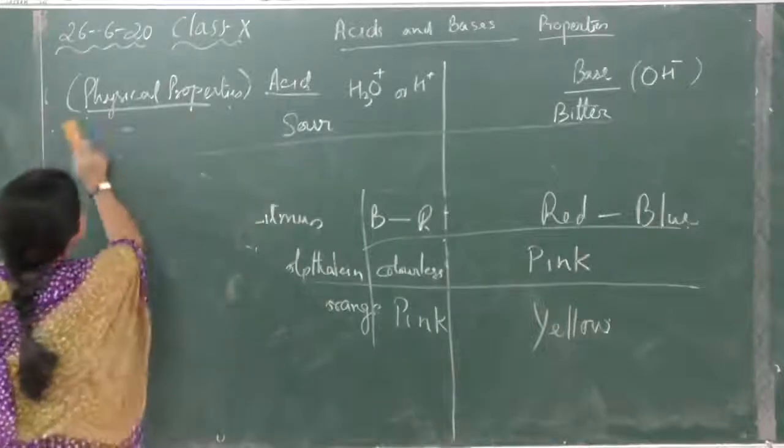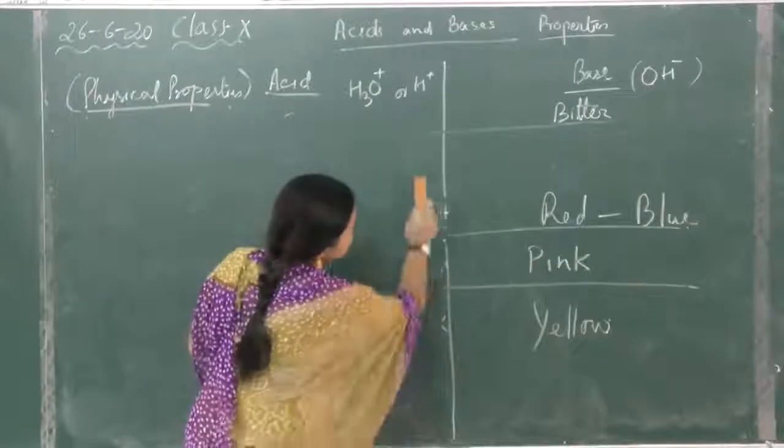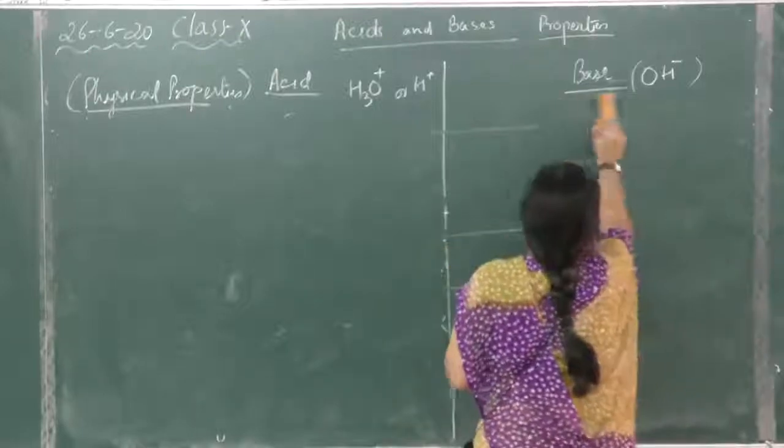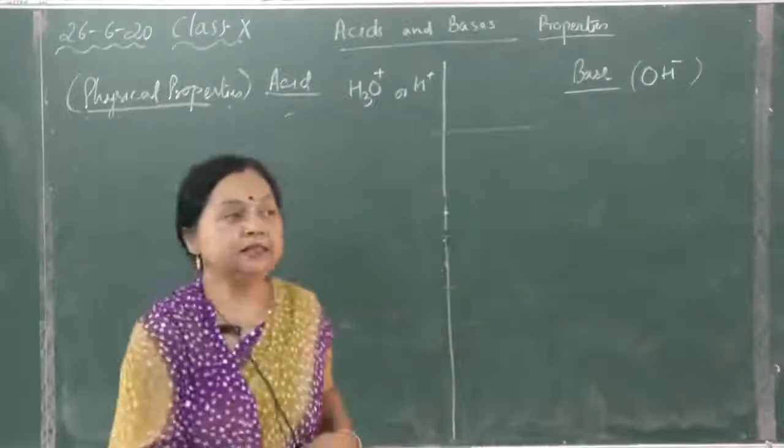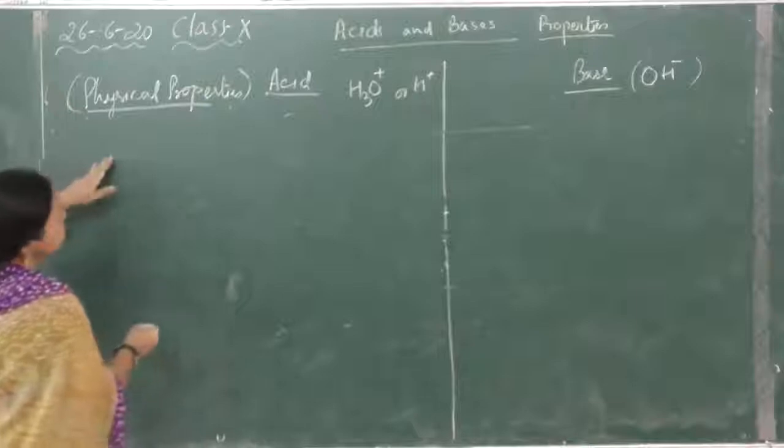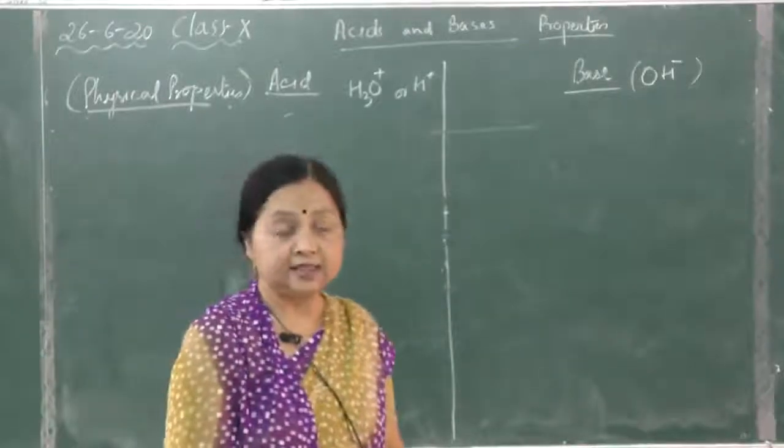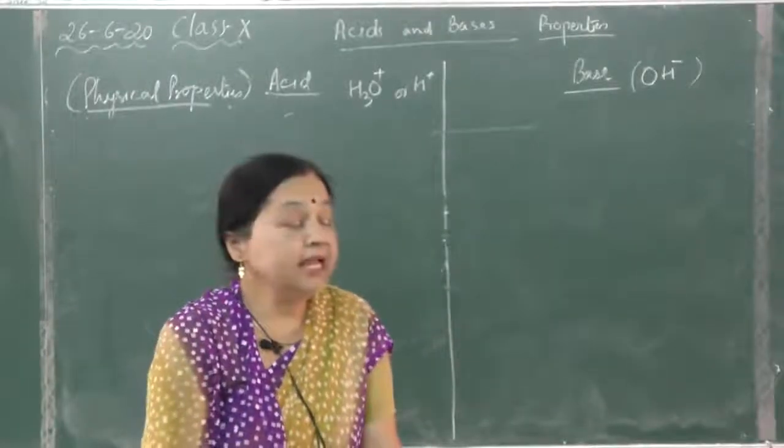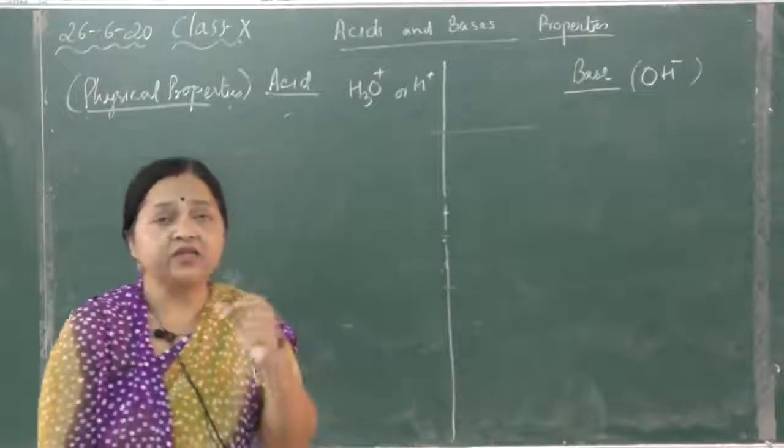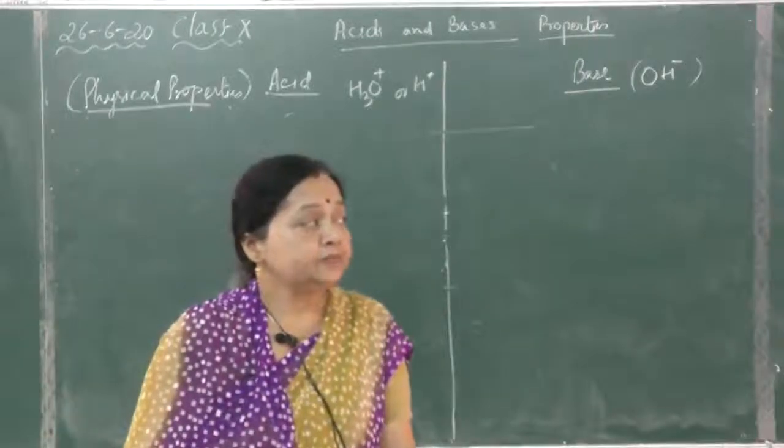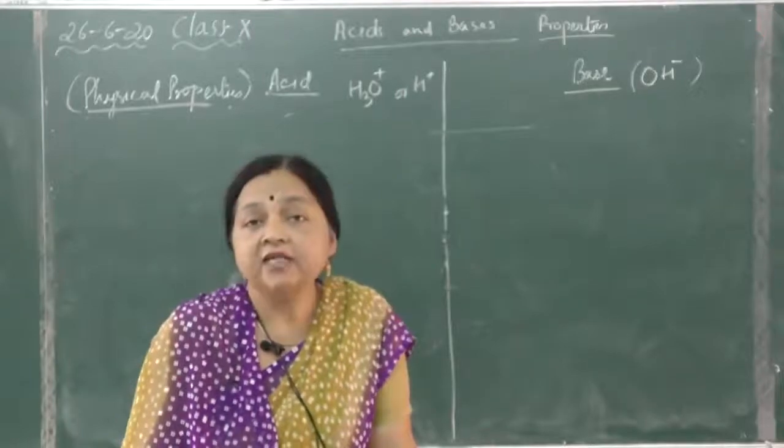After this we move to the chemical properties. Chemical properties are also due to the ions that they furnish. First is, in acids, the important reaction that comes to mind for an acid, acidic property when we are saying acid is any reactive metal. Reactive metal means metals those who are placed above hydrogen in the reactivity series. The very reactive metals will act violently. Sodium, potassium, calcium also will react violently with the acid.